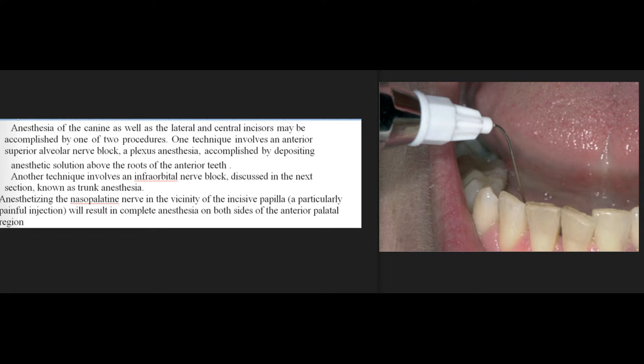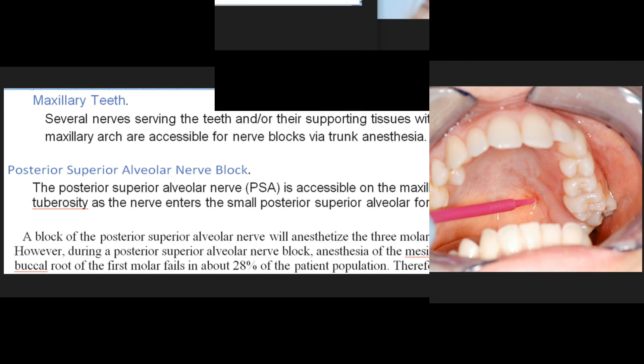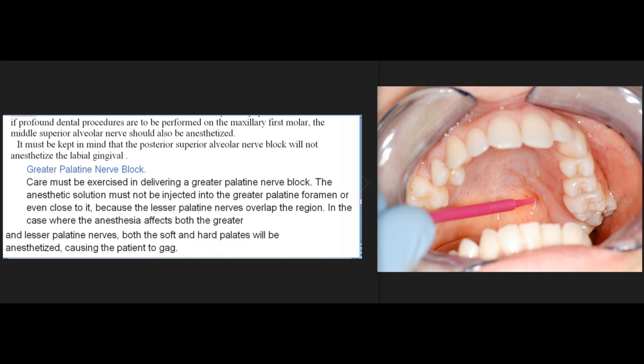Trunk anesthesia is a mode of anesthesia where the anesthetic solution is deposited in the immediate vicinity of the nerve or nerve trunk proximal to the area to be treated. Several nerves serving the teeth and/or their supporting tissues within the maxillary arch are accessible for nerve blocks via trunk anesthesia. The posterior superior alveolar nerve is accessible on the maxillary tuberosity as the nerve enters the small posterior superior alveolar foramen. A block of the posterior superior alveolar nerve will anesthetize the three molars; however, anesthesia of the mesial buccal root of the first molar fails in about 28% of the patient population. Therefore, if profound dental procedures are to be performed on the maxillary first molar, the middle superior alveolar nerve should also be anesthetized. The posterior superior alveolar nerve block will not anesthetize the labial gingiva.